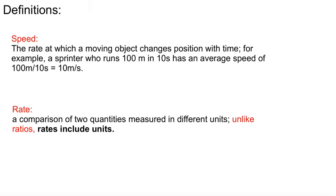Before we do anything, here are some definitions to take down — feel free to pause if you need to. First: speed is the rate at which a moving object changes position with time, basically going from point A to point B and how fast that happens. For example, a sprinter who runs 100m in 10 seconds has an average speed of 100m over 10 seconds, or 10 metres per second. That's how speed is measured — using a rate. A rate is a comparison of two quantities measured in different units, like metres and seconds. Unlike ratios, which use the same units and have no unit label, rates have units — and they're different units.